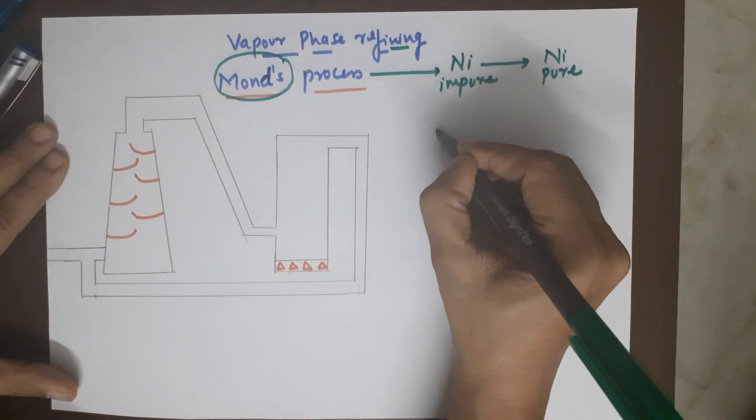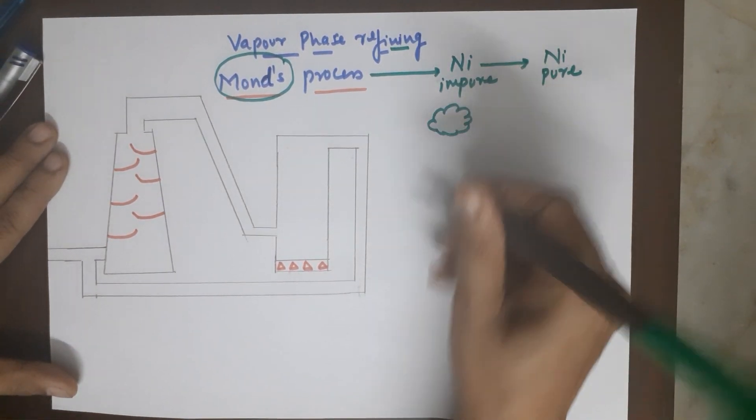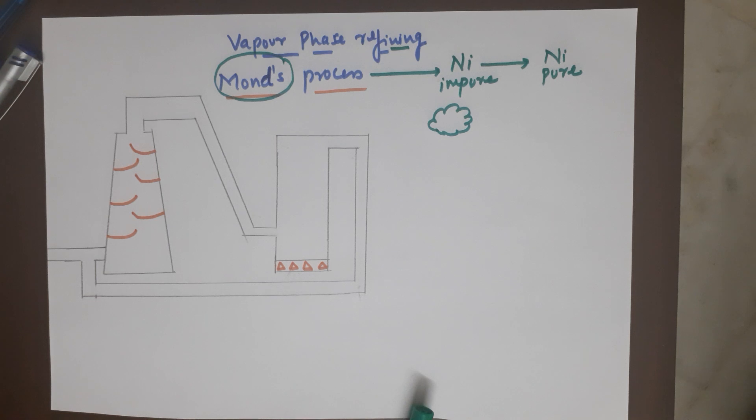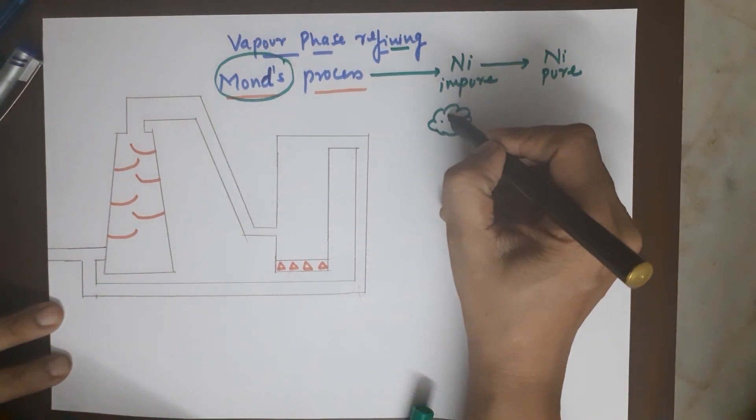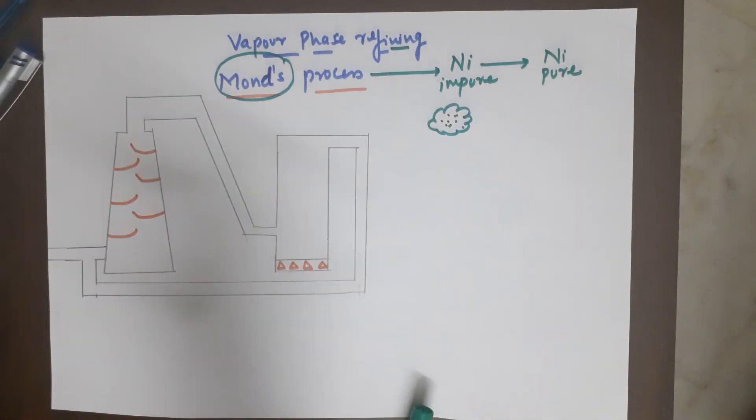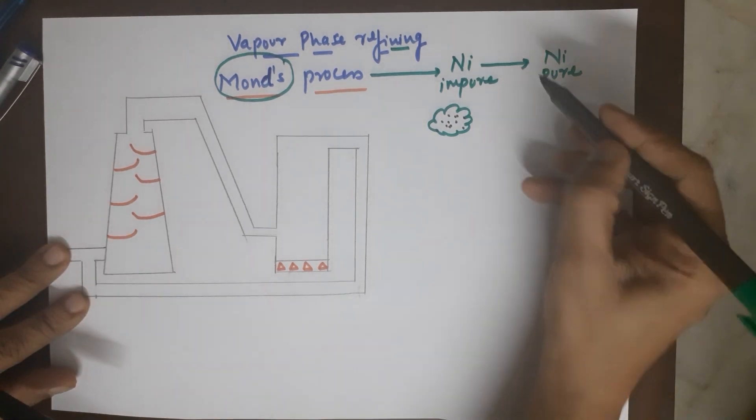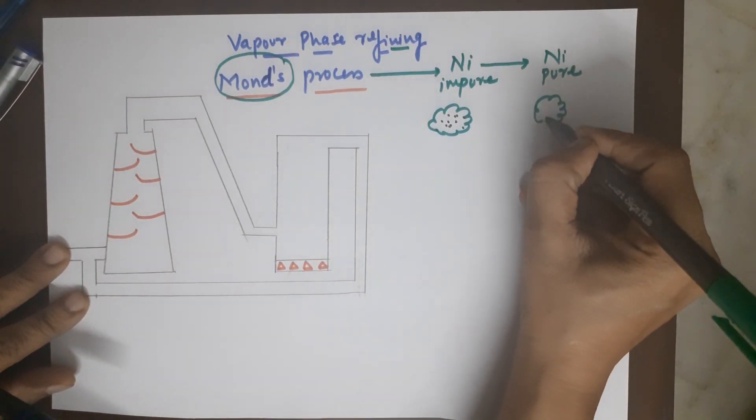So if I have impure nickel, I would be representing impure nickel like this with impurities in it with these black marks. These are the impurities. While the pure nickel is represented like this.